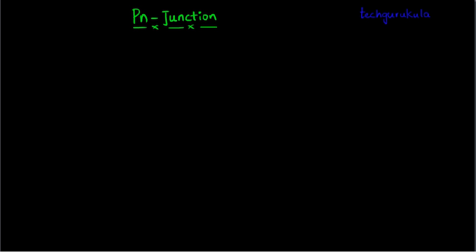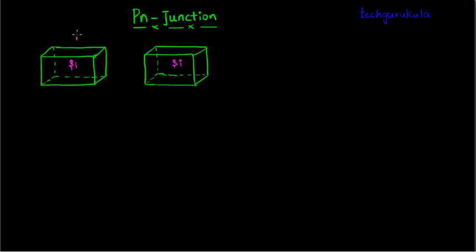To build a model for the PN junction, let us consider two pieces of crystalline semiconductor materials. In this case, the material we assume is silicon. The first material is uniformly doped with trivalent or acceptor impurities — in this case, boron. This makes this piece of semiconductor a P-type semiconductor in which the majority carriers are holes and minority carriers are electrons.